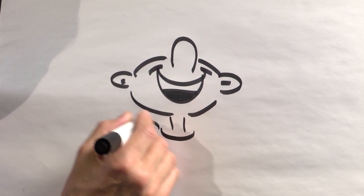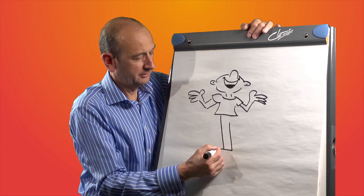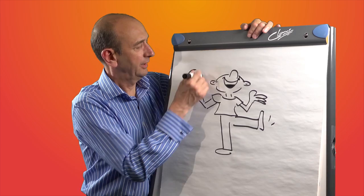Here's a chap who's juggling. Here's his arms. Here's his other hand. Here's his leg, I think we'll put one foot up like that. And he's juggling some balls.